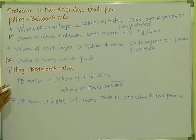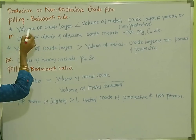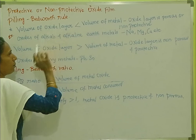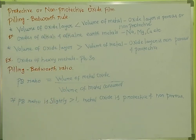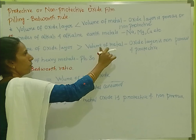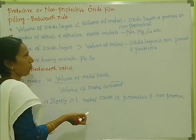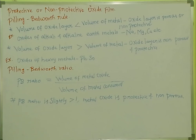If you form an oxide layer, we consider the volume. The oxide layer will have a volume, and the metal layer will have a volume. The oxide layer will be forming — porous or non-protective. Porous means there are holes. When there are holes, it causes further oxygen to access, leading to corrosion.